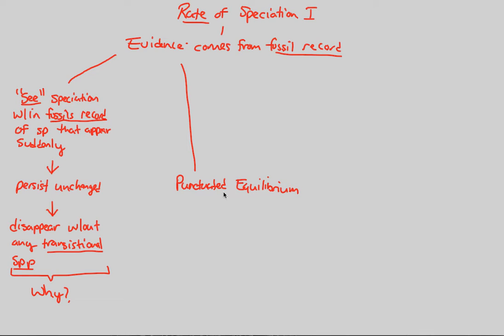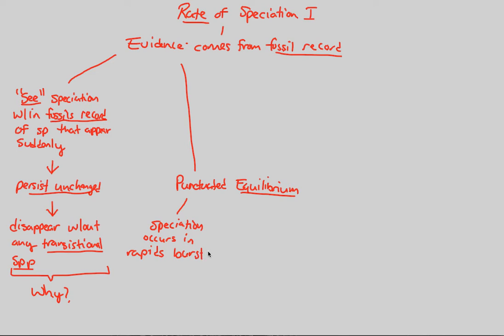Punctuated equilibrium was a hypothesis and theory developed by two scientists, Eldridge and Gould. They proposed that you have punctuations — points at which large amounts of speciation occur — followed by equilibrium, meaning persistent unchangingness. In other words, speciation occurs in rapid bursts, which is what we mean by 'punctuated,' but these rapid bursts are followed by long periods of what is known as stasis.